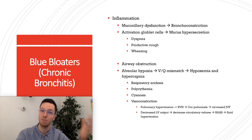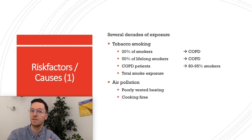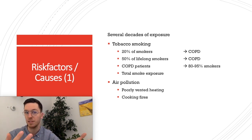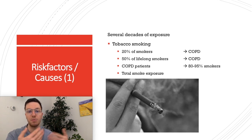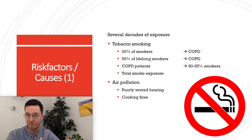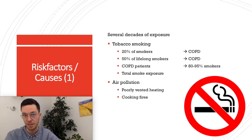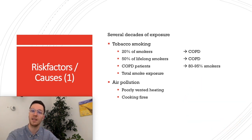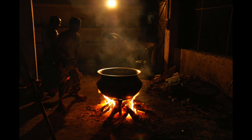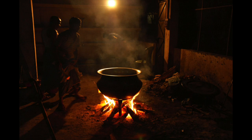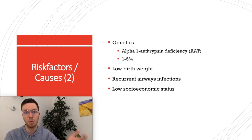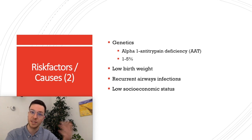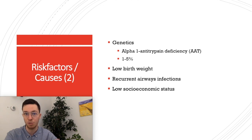Now let's go to the risk factors. In order to develop COPD, there need to be several decades of exposure to any of these risk factors. The most common is tobacco smoking — 20% of all smokers will eventually get COPD, and 50% of lifelong smokers will develop COPD. Of all COPD patients, 80 to 95% were or are smokers. Globally, air pollution also plays an important role, mostly from poorly ventilated heating or cooking on fires. Genetics can also contribute in some cases, mostly alpha-1 antitrypsin deficiency, which causes 1 to 5% of all COPD cases. Other risk factors include low birth weight, recurrent airway infections, and low socioeconomic class.